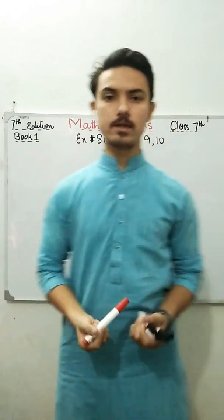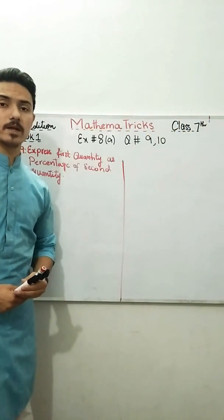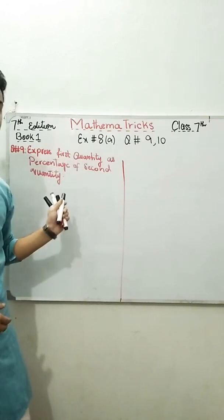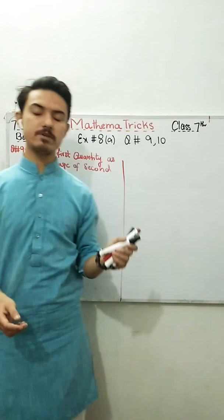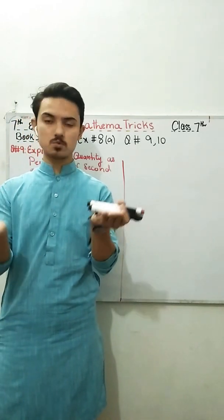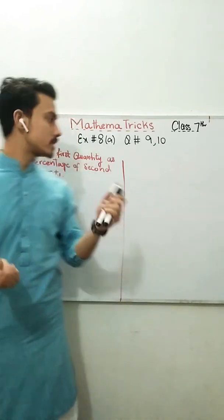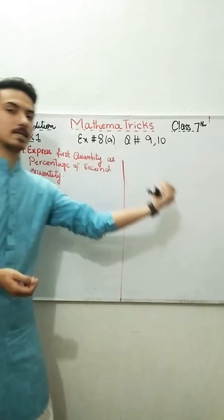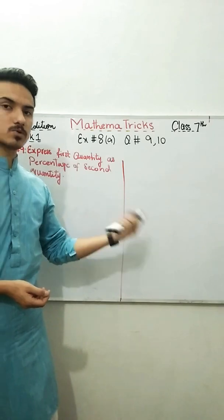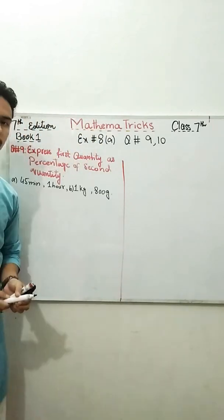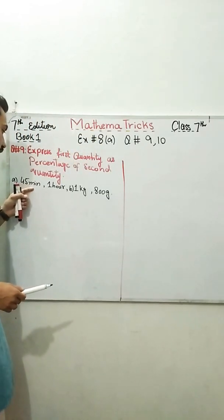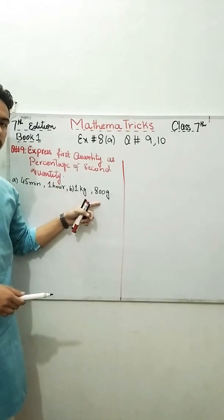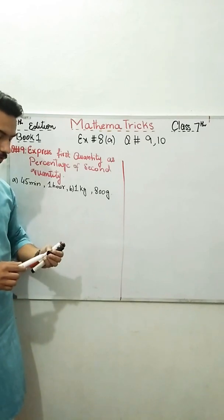What is the question number 9? So here in question number 9, what do we need to do? We need to express the first quantity as percentage of second quantity. So we have given two quantities, the first one and the second one. We need to express the first quantity as percentage of second quantity.